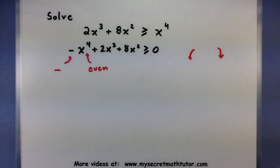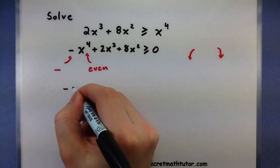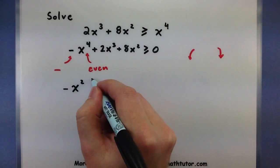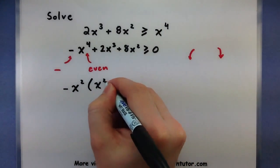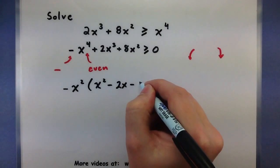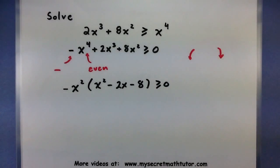Alright, now that I have my end behavior, let's go ahead and figure out some x-intercepts. Looks like everything in here, I can factor out an x squared and also take a negative sign with it. Let's see, so this will leave me an x squared minus 2x minus 8. Okay, not too shabby.